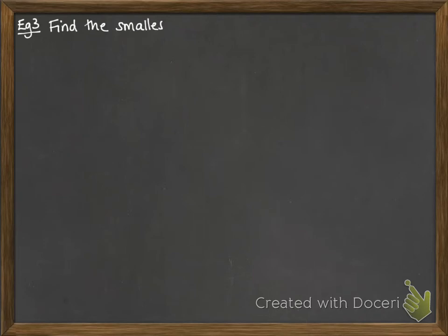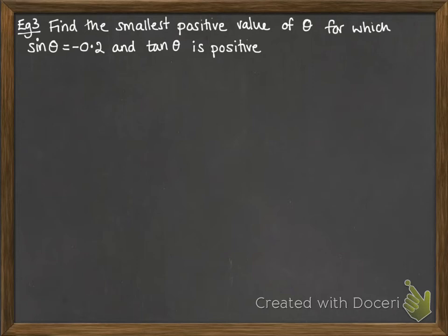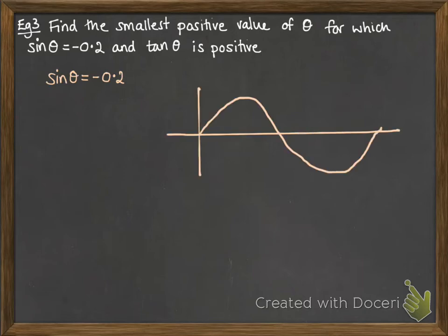Example number 3. We want to find the smallest positive value of theta, for which sine theta equals minus 0.2, and tan theta is positive. So we're looking for solving this equation first of all, sine theta equals minus 0.2.